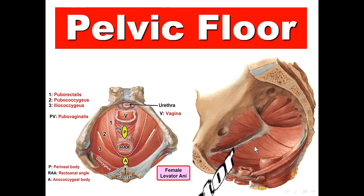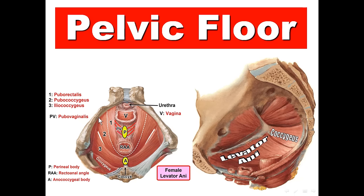The pelvic floor is formed of two muscles: levator ani and coccygeus. This is the pelvic floor in the female. The levator ani muscle is formed of three parts, which will be discussed in another presentation. The pelvic diaphragm is formed mainly by the levator ani, assisted by the coccygeus muscle.